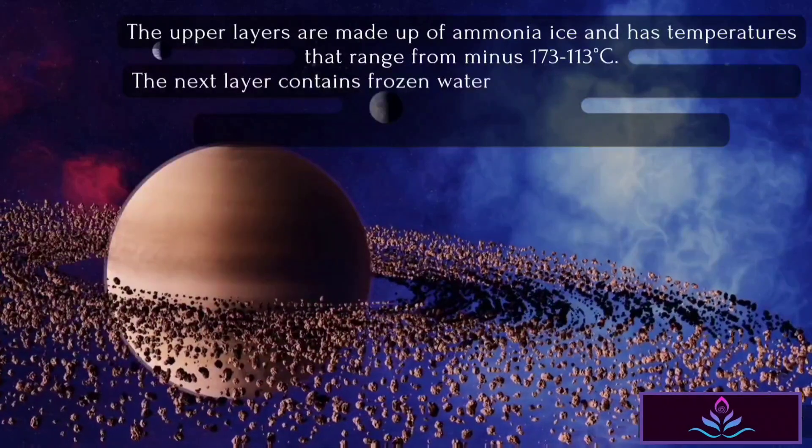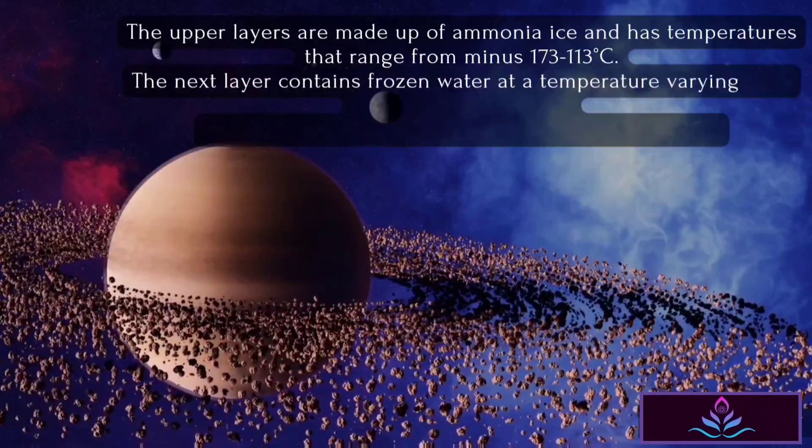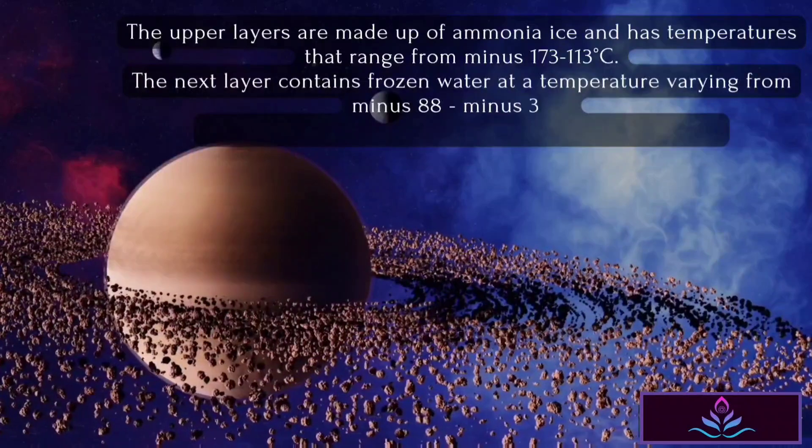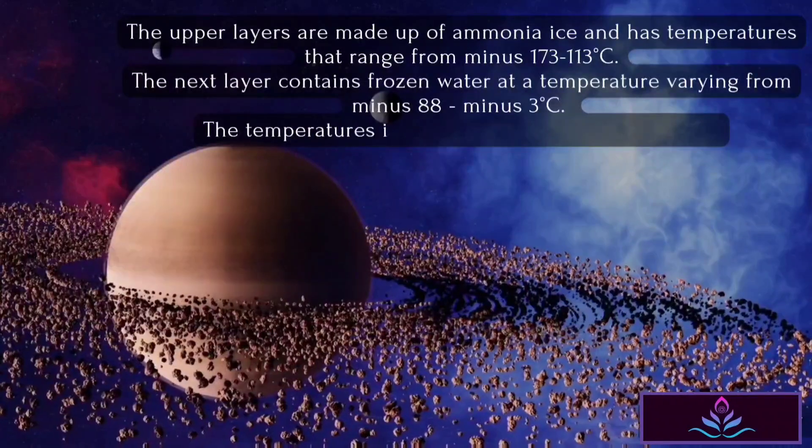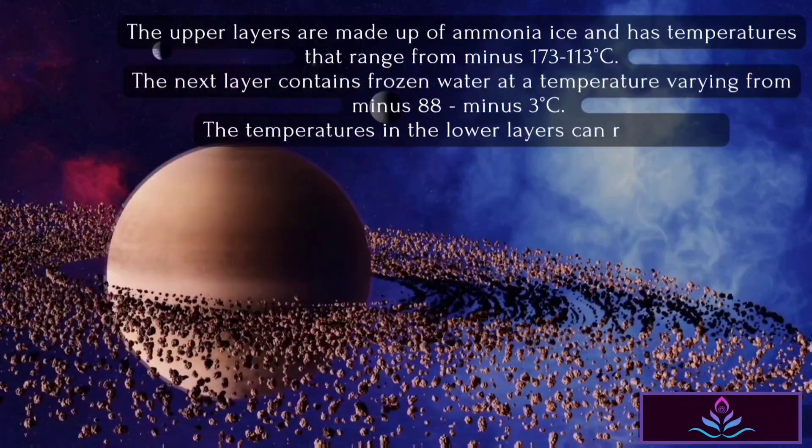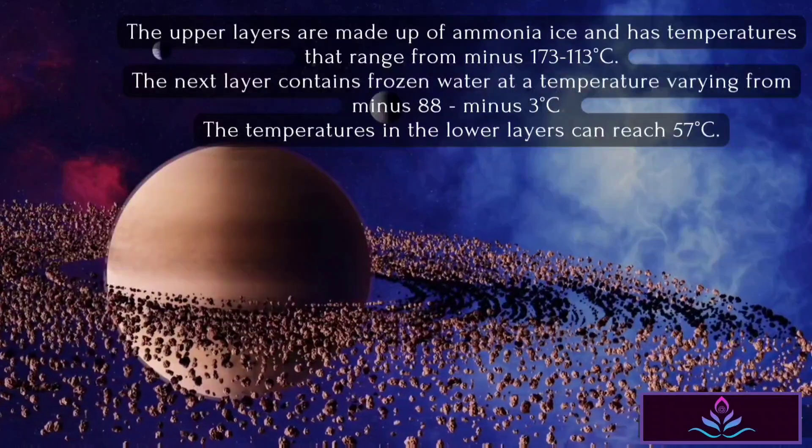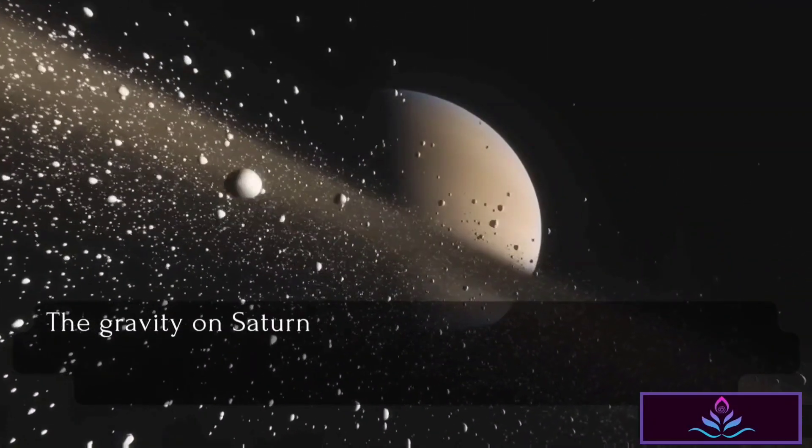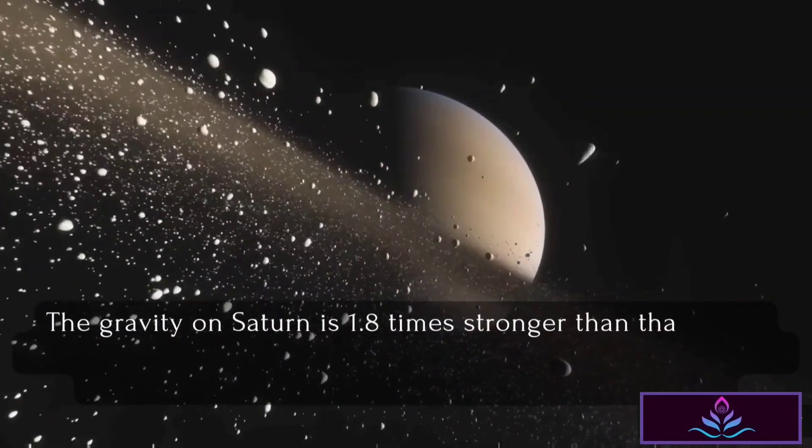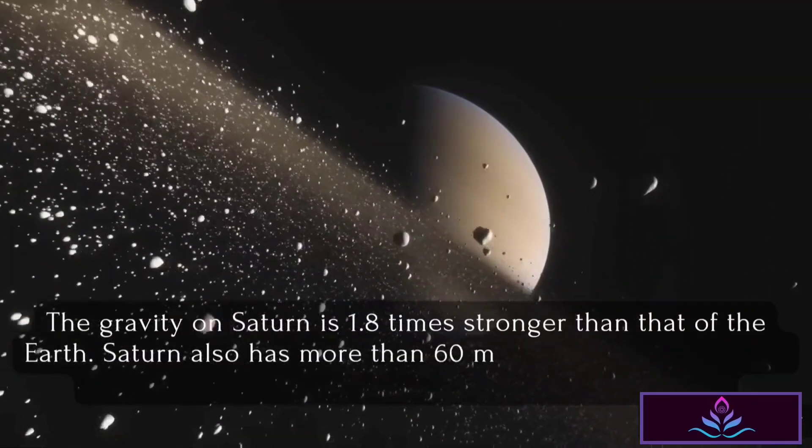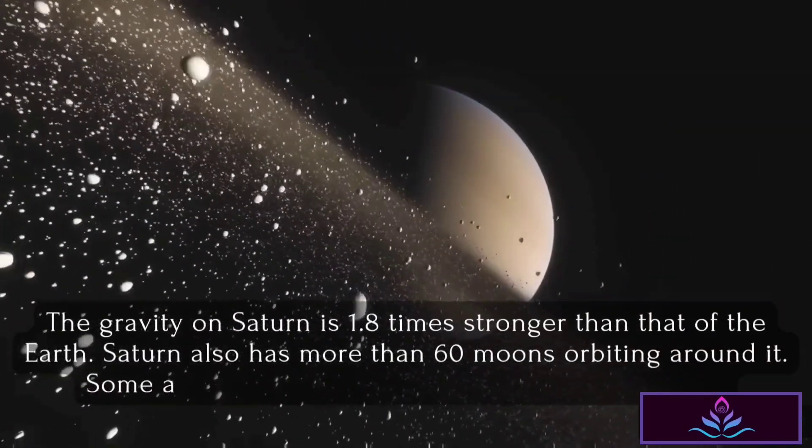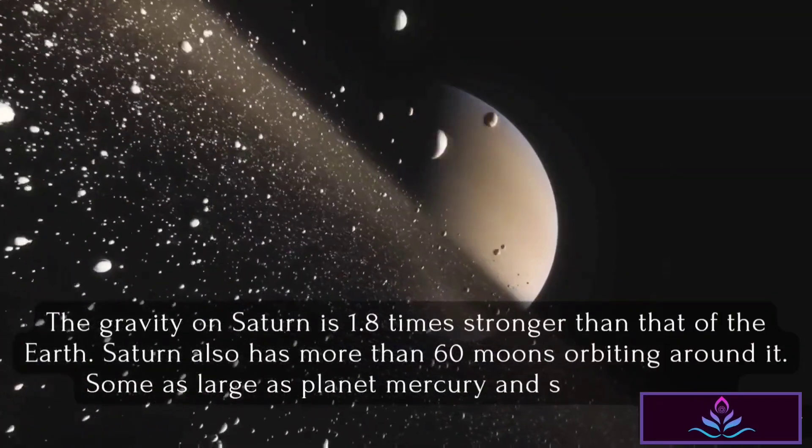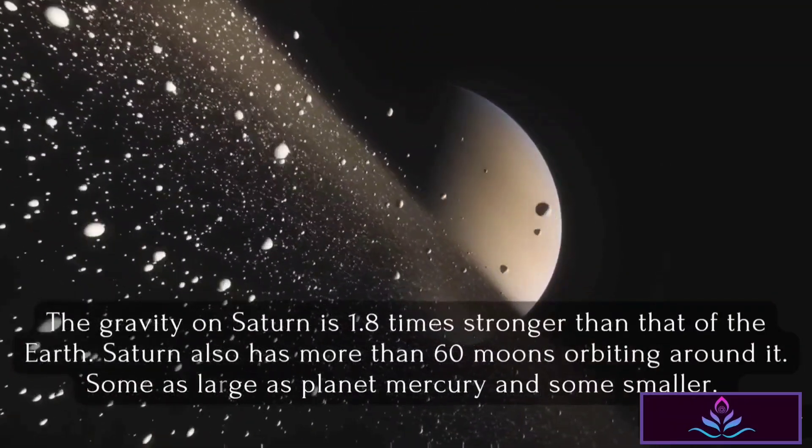The next layer contains frozen water at a temperature varying from minus 88 to minus 3 degrees Celsius. The temperatures in the lower layers can reach 57 degrees Celsius. The gravity on Saturn is 1.8 times stronger than that of the Earth. Saturn also has more than 60 moons orbiting around it, some as large as planet Mercury and some even smaller.